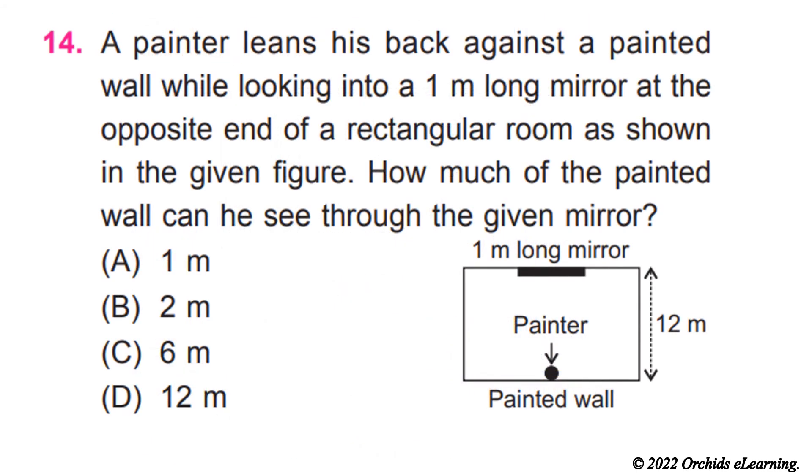A painter leans his back against a painted wall while looking into a 1 meter long mirror at the opposite end of a rectangular room as shown in the given figure. How much of the painted wall can he see through the given mirror? Answer B, 2 meters.